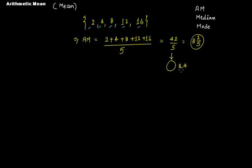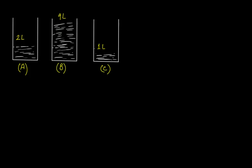So 8.4 will be the decimal representation. Either this mixed number or 8.4 will be the arithmetic mean for this data set. The method is: first add all the values given, and divide that addition by the number of values present in the data set.